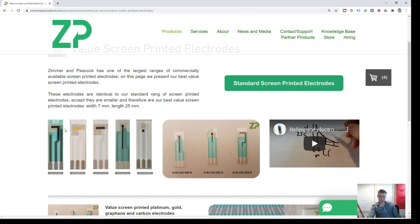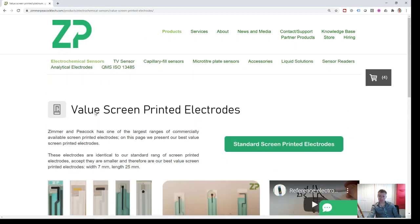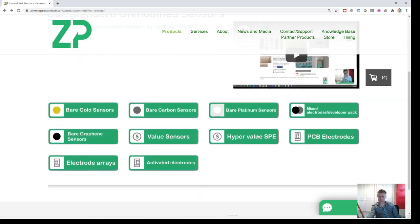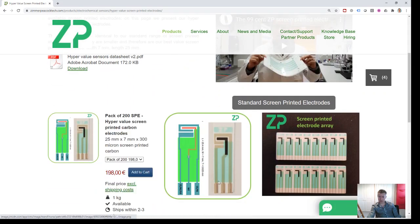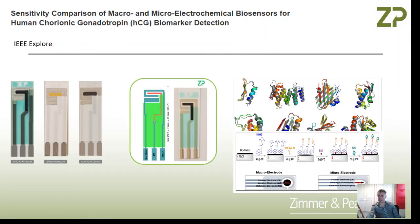Sometimes we might suggest the carbon 303. I would like it if rather than using what we call our value screen printed electrodes, if we were able to use our hyper value screen printed electrodes because the price is just so much more competitive.